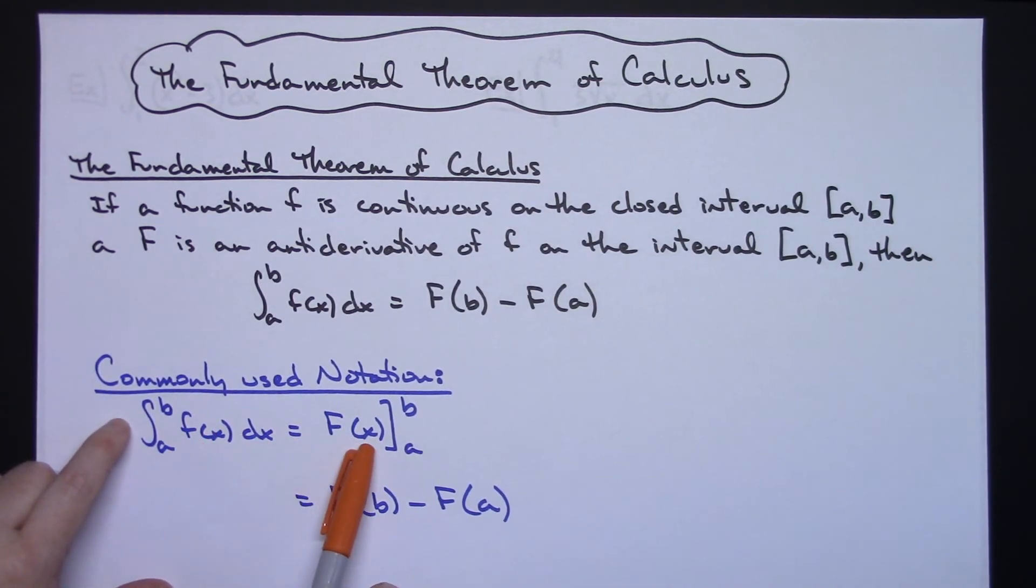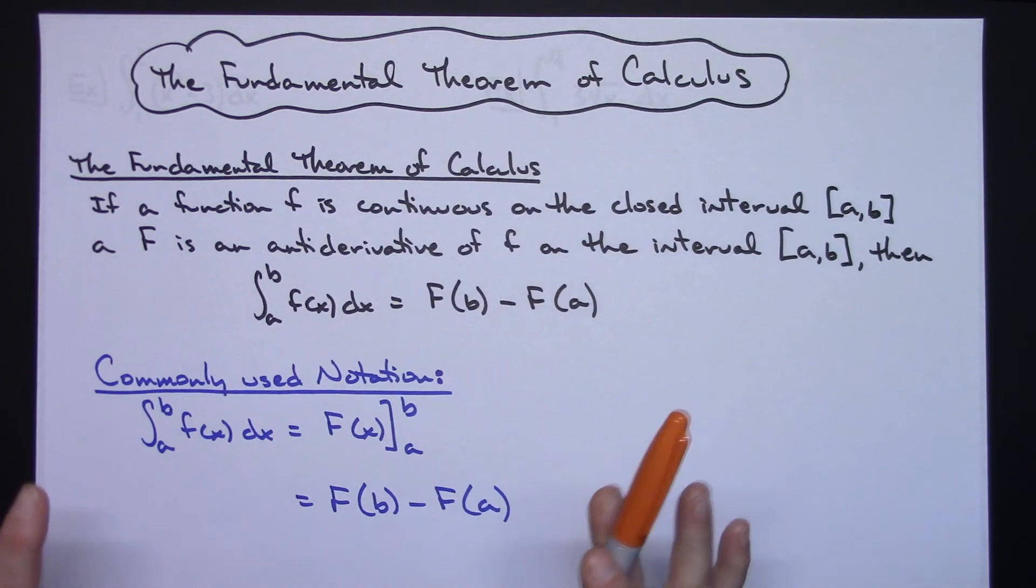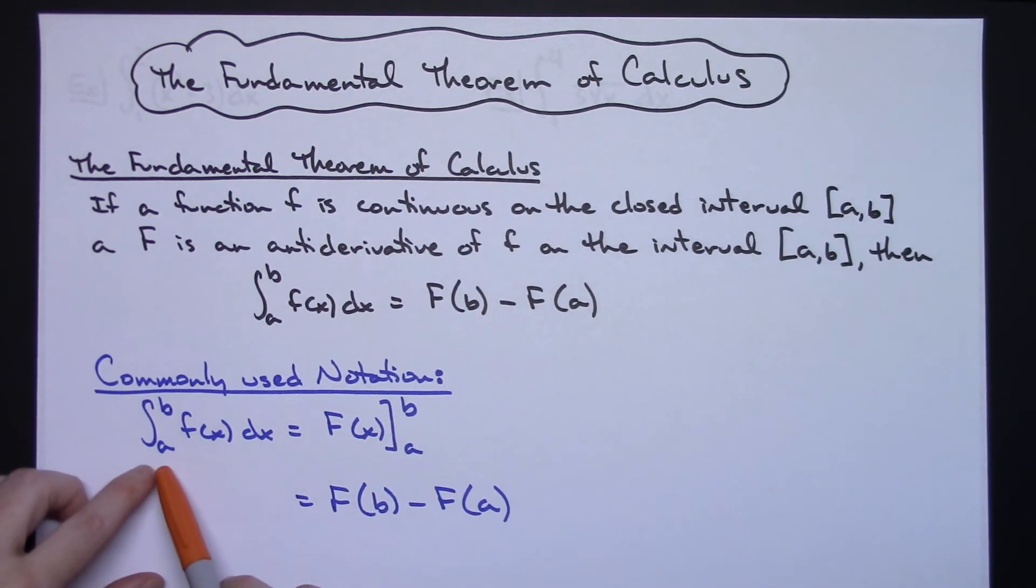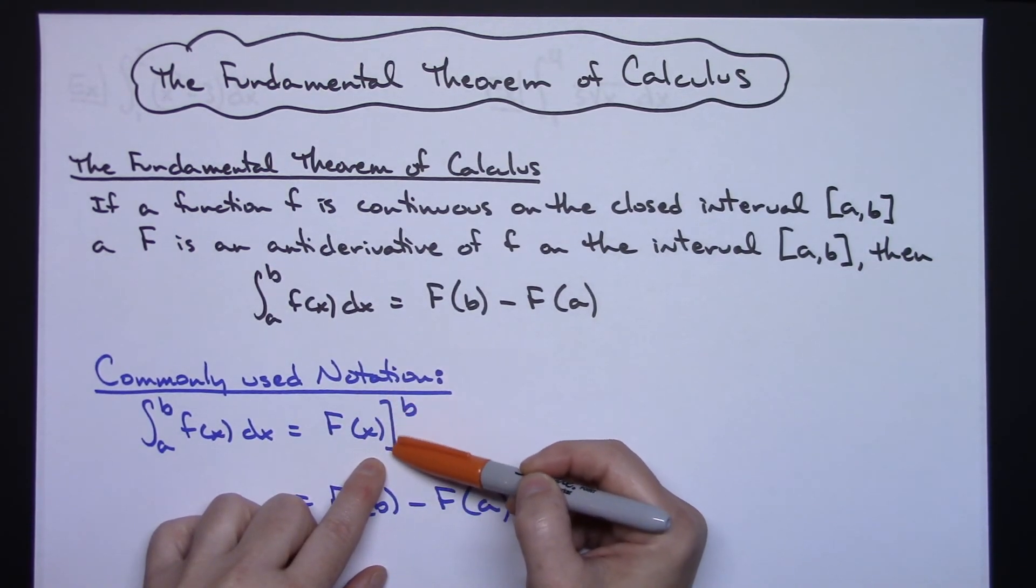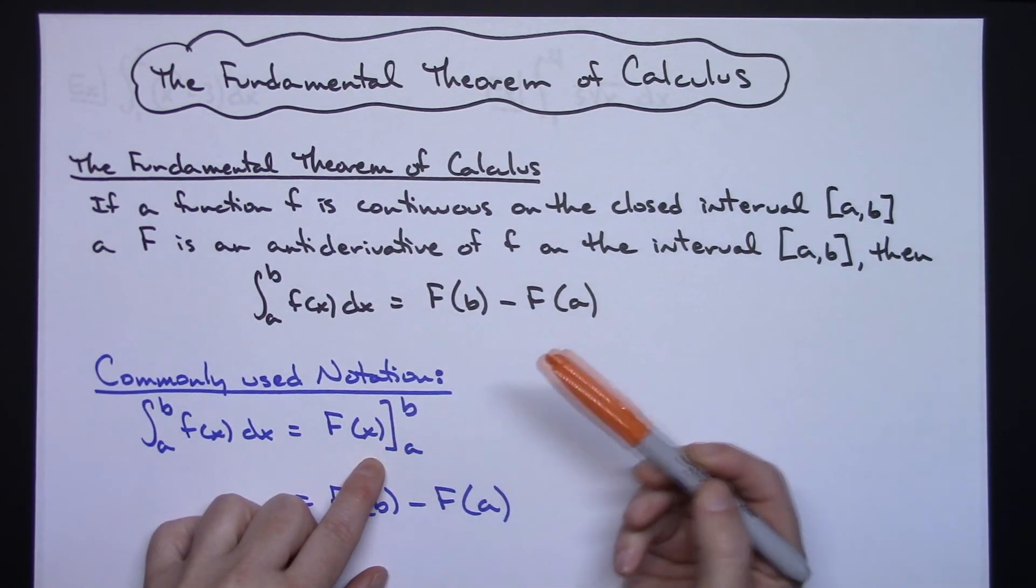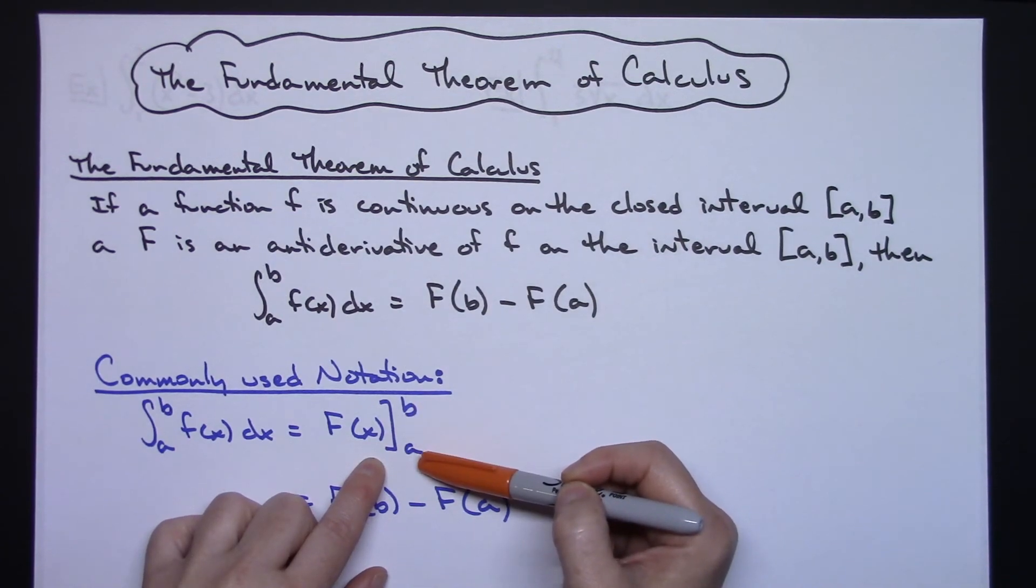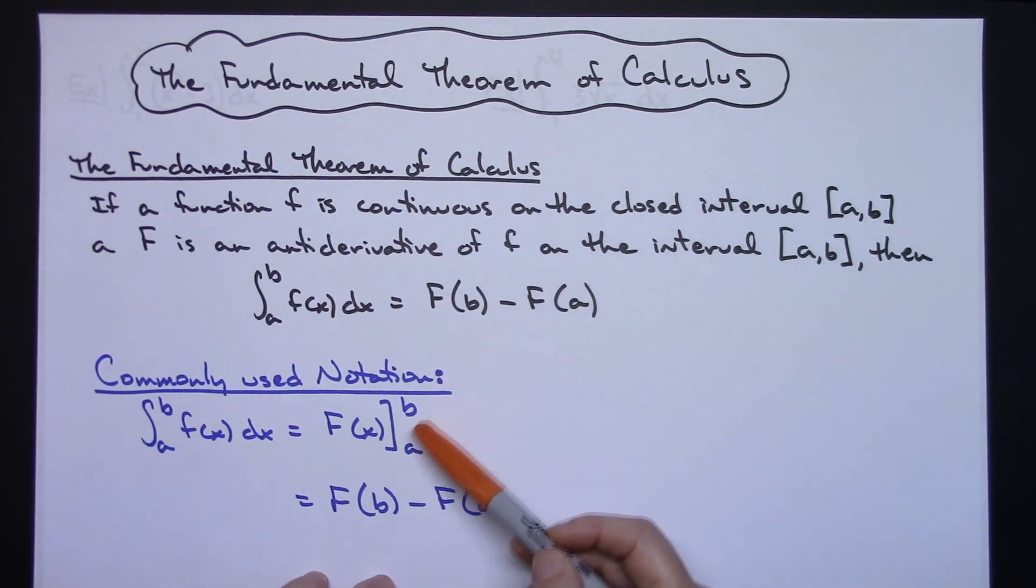Okay, so some commonly used notation here, when we go to work this definite integral out, we would have our definite integral f(x)dx. Alright, F representing the antiderivative here, and then after you've calculated that antiderivative, usually there's notation, square box notation at the end, and your limits of integration are here, and then you do the plugging in to do the subtraction in the arithmetic to find that actual definite integral.